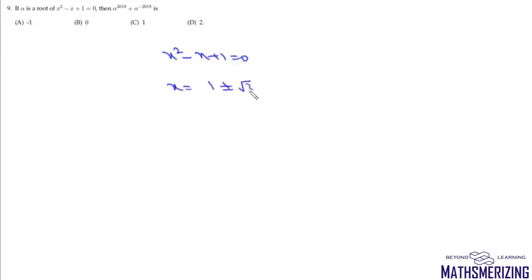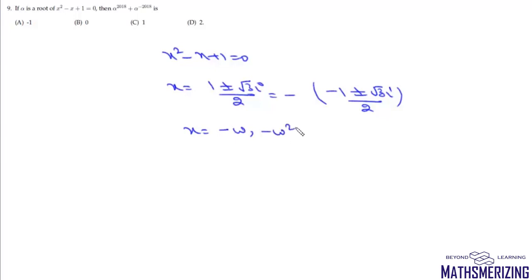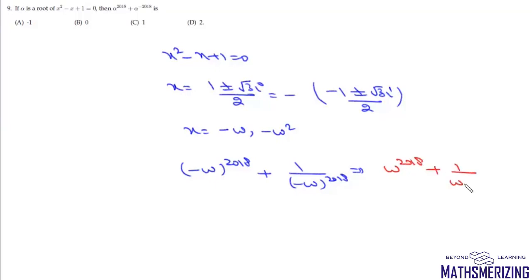Question 9: α is a root of x² − x + 1 = 0. Solving gives x = (1 ± √3·i)/2 = −ω or −ω², where ω is a complex cube root of unity. Taking x = −ω, we compute (−ω)^2018 + 1/(−ω)^2018. Since 2018 mod 3 = 2, this equals ω² + 1/ω² = ω² + ω = −1. That's option A.